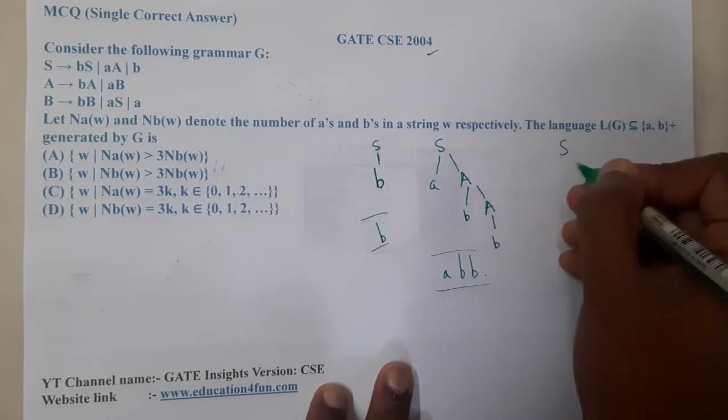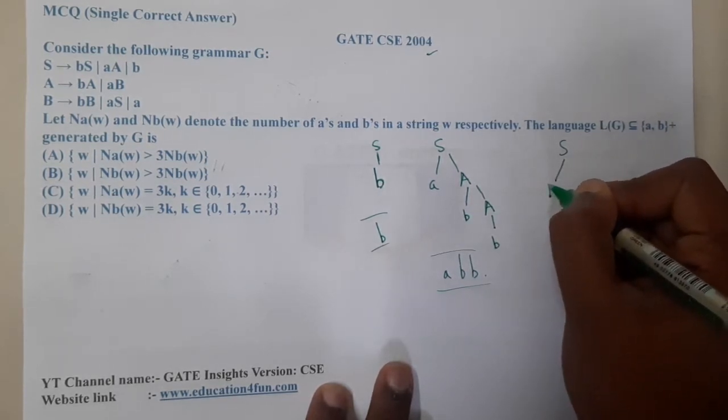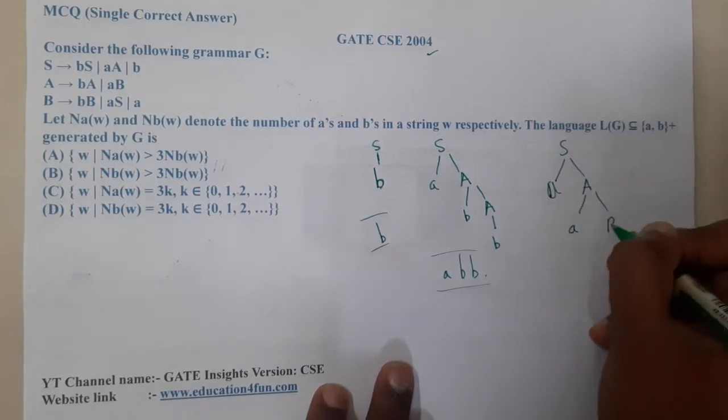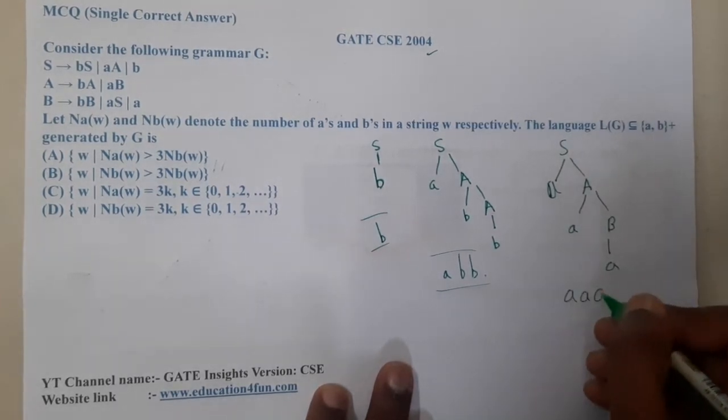Small a, capital A, small a, capital B from ba. So I can generate a triple a also.